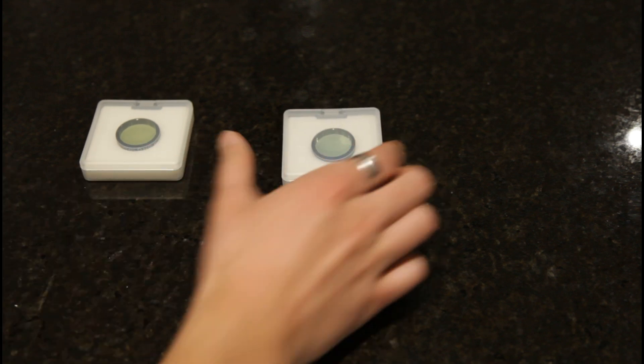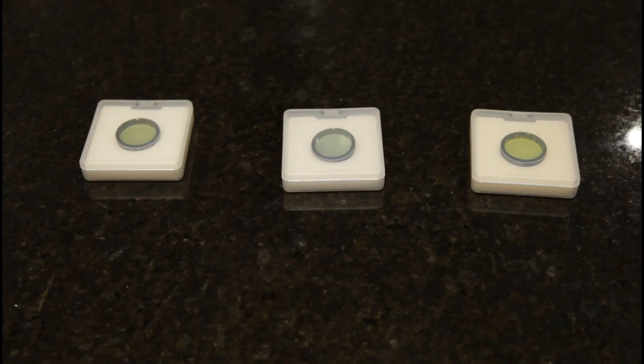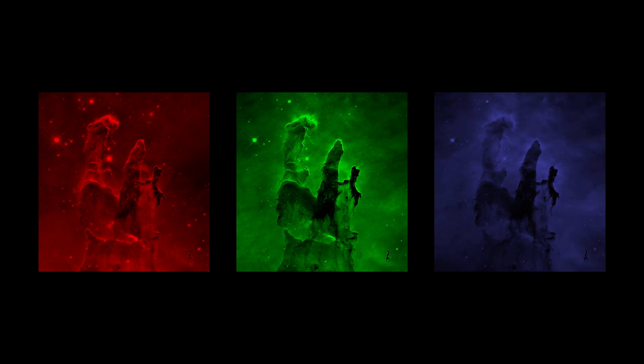With narrowband imaging, Hubble takes three separate images in three different wavelengths, one in sulfur-2, one in hydrogen-alpha, and one in oxygen-3. Then on a computer, a scientist will combine the images to form a full color image, mapping sulfur-2 to red, hydrogen-alpha to green, and oxygen-3 to blue.